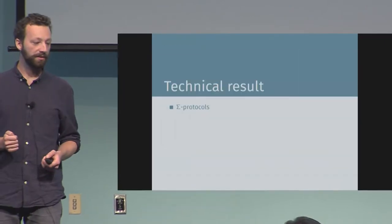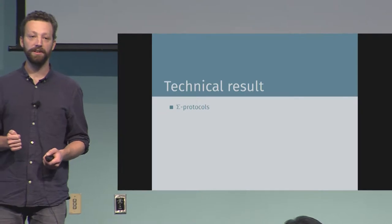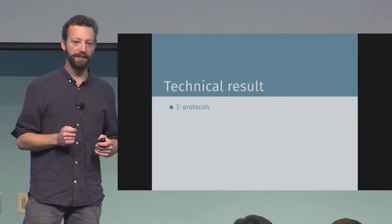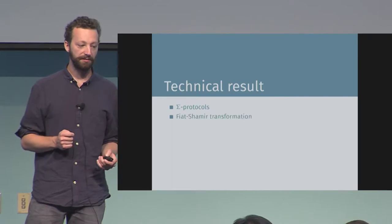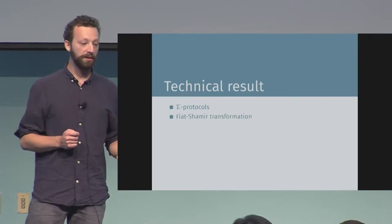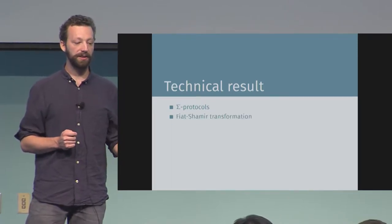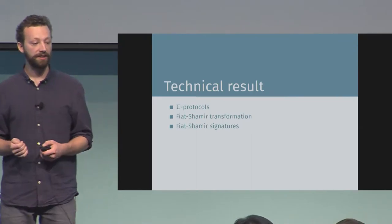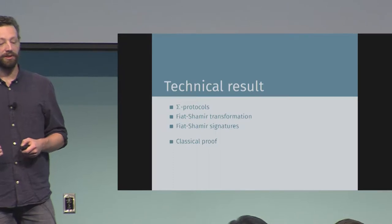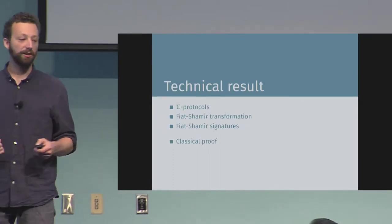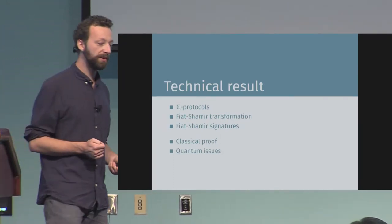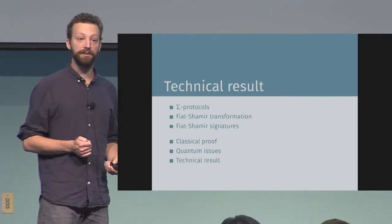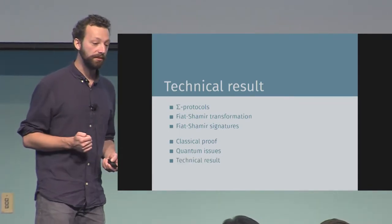I will first tell you more about the technical details of our results, for which I need to explain a bit about Sigma protocols and how the Fiat-Shamir transformation works. I will also say a bit about how to extend this paradigm to obtain signature schemes, then give you an intuition for the classical proof and the quantum issues that arise in the QROM, and finally the technical results we use to overcome these issues.